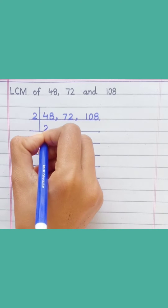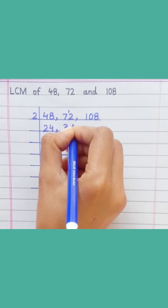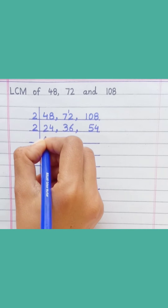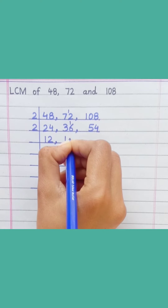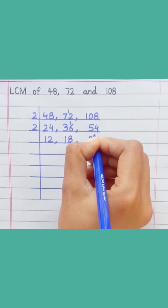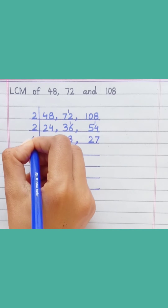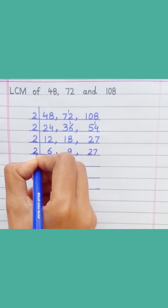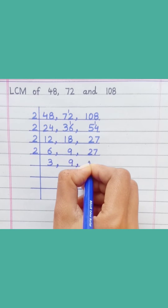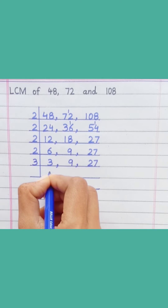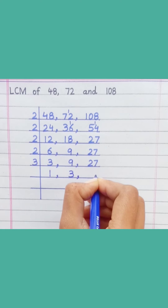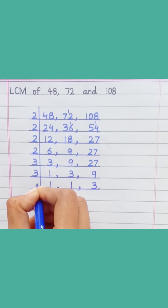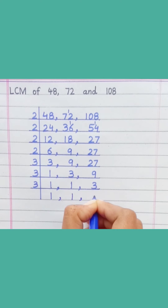Two twos are four, two fours are eight, two threes are six, two sixes are twelve, two fives are ten, two fours are eight, two ones are two, two twos are four, two ones are two, two eights are sixteen, two twos are four, two sevens are fourteen, two sixes are twelve, two nines are eighteen, two threes are six. Three ones are three, three threes are nine, three nines are twenty-seven, three ones are three, three threes are nine, three ones are three.